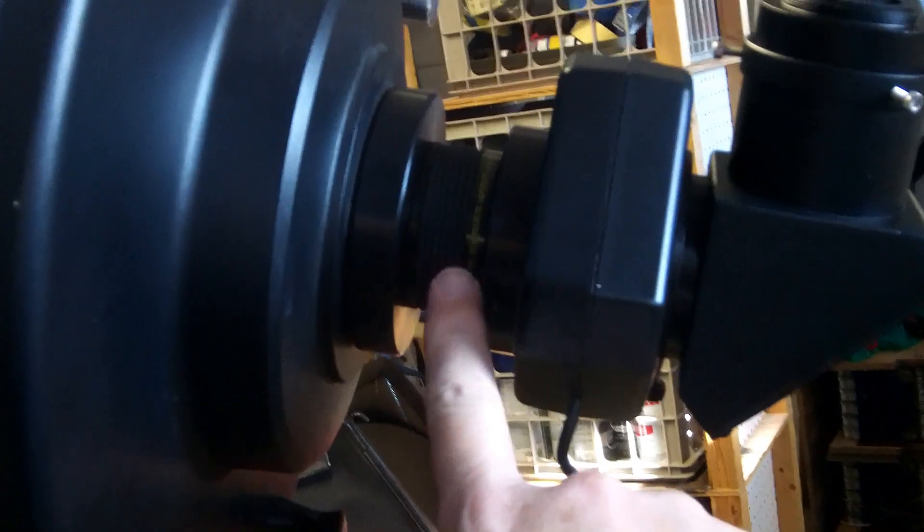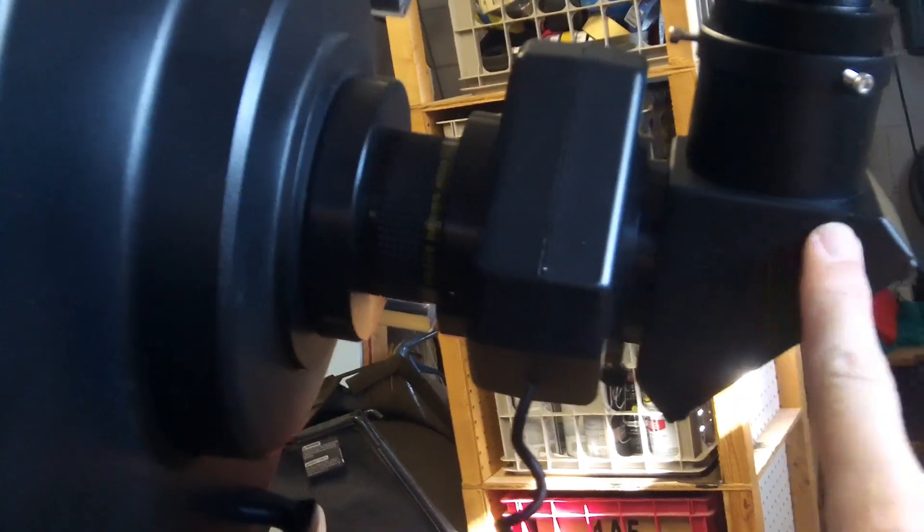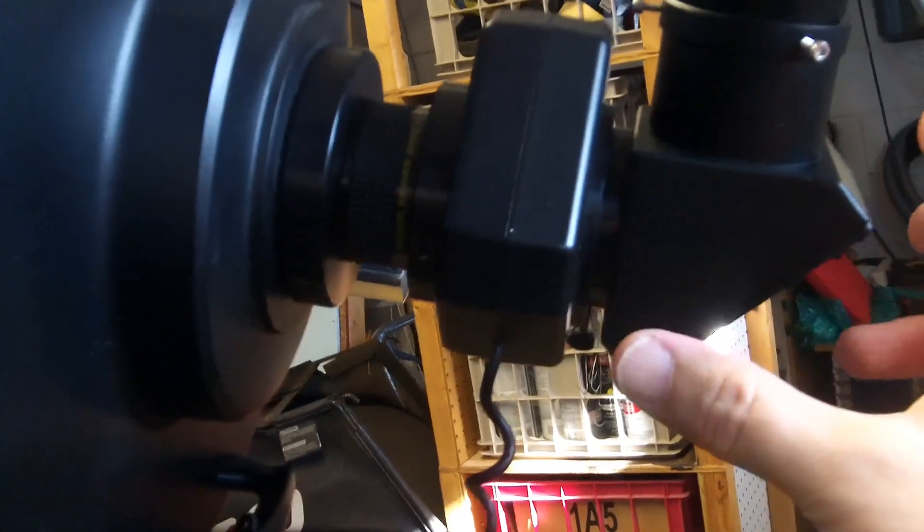So in actual use with an astrophotography camera, you might omit the diagonal and just put the camera right into the micro focuser.